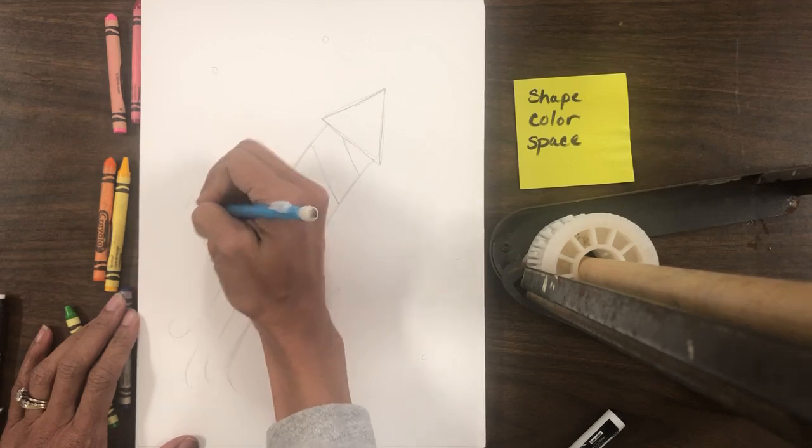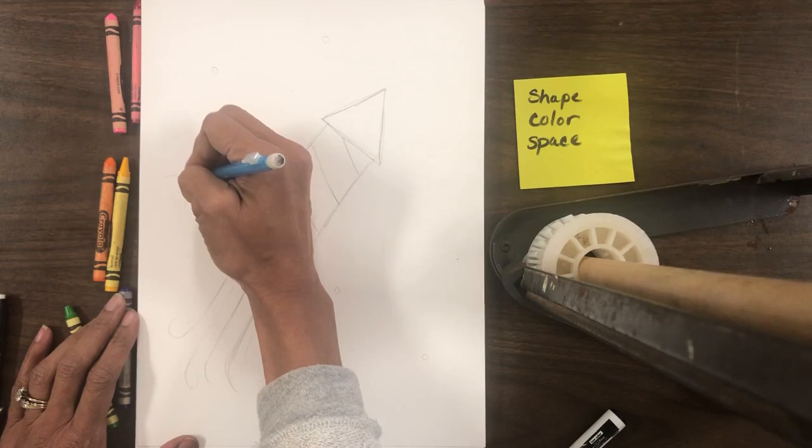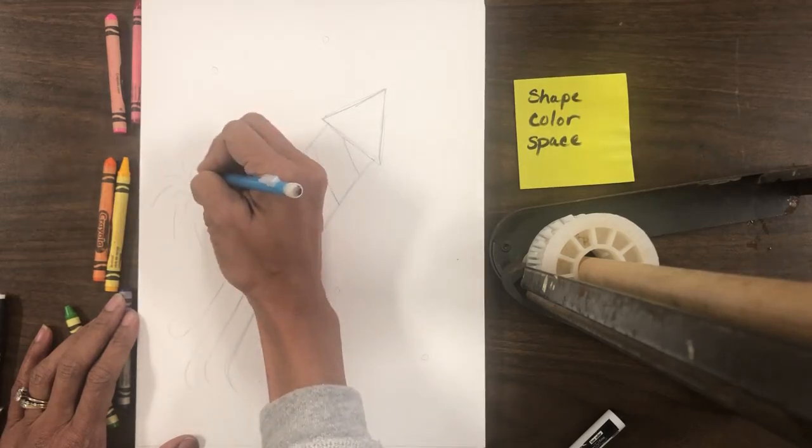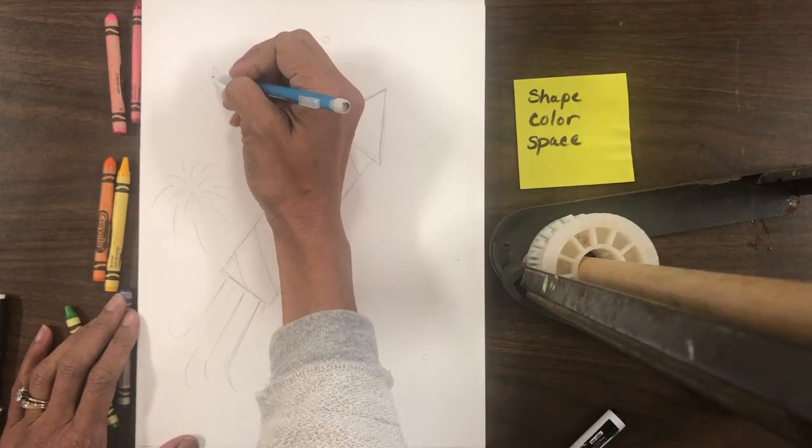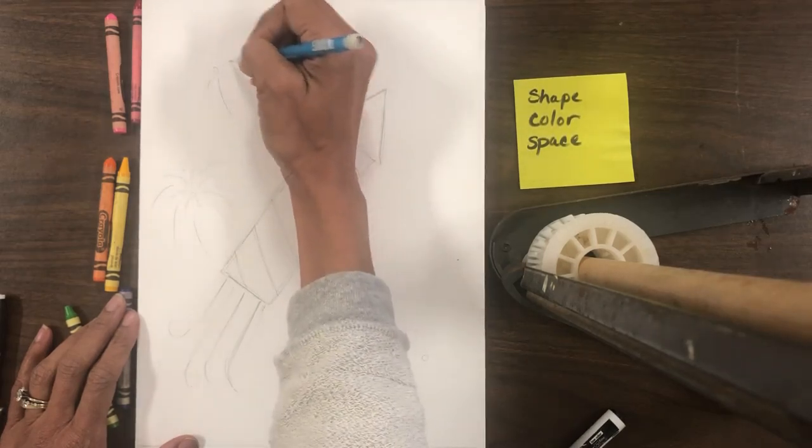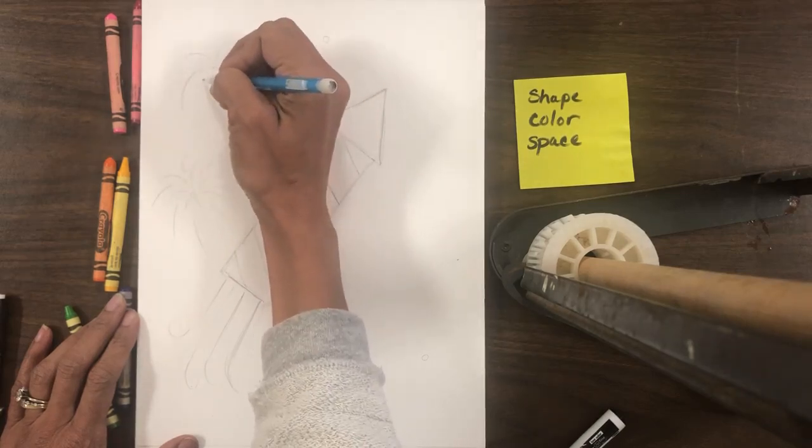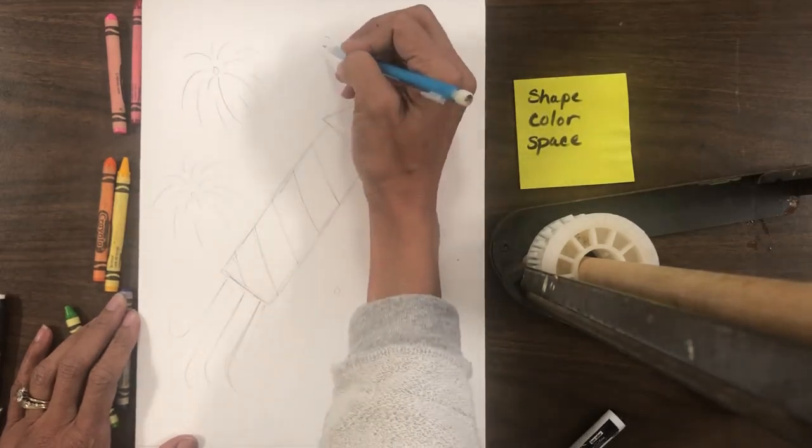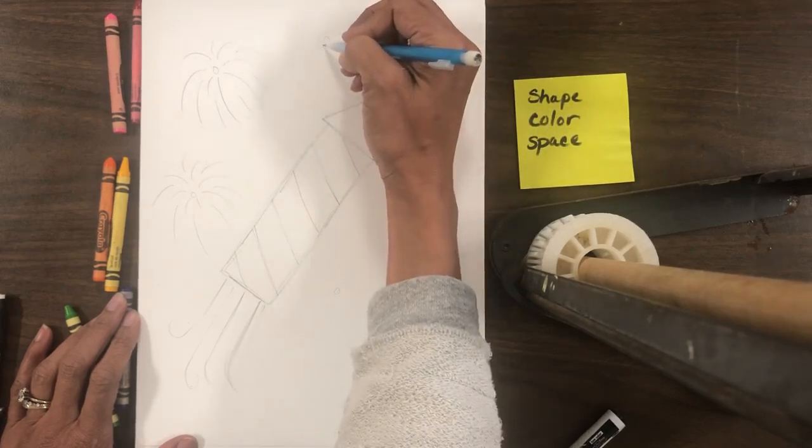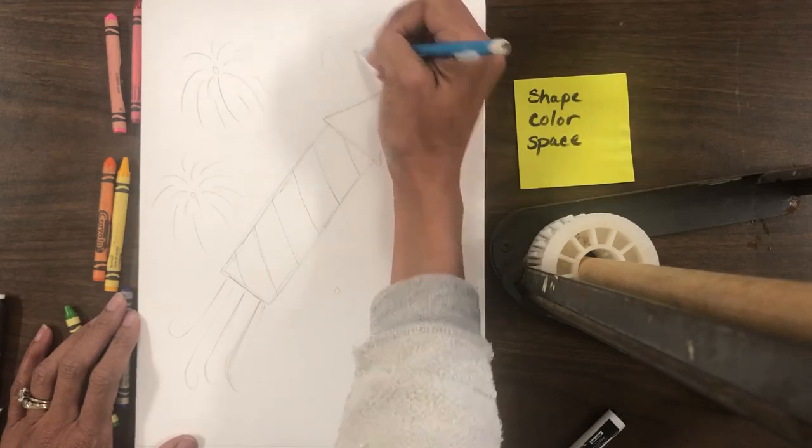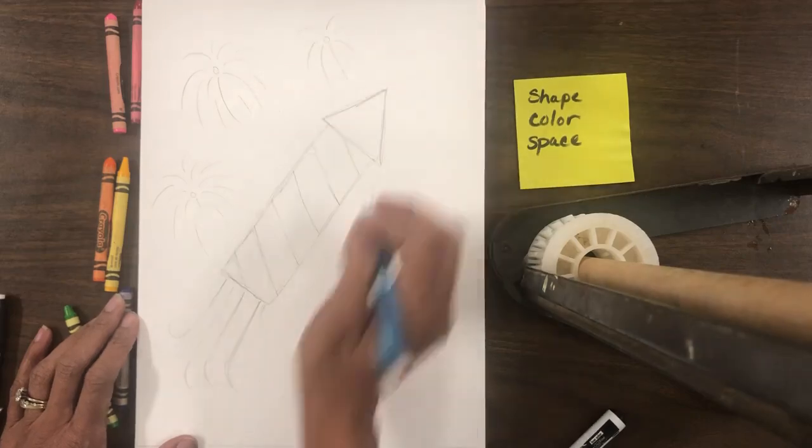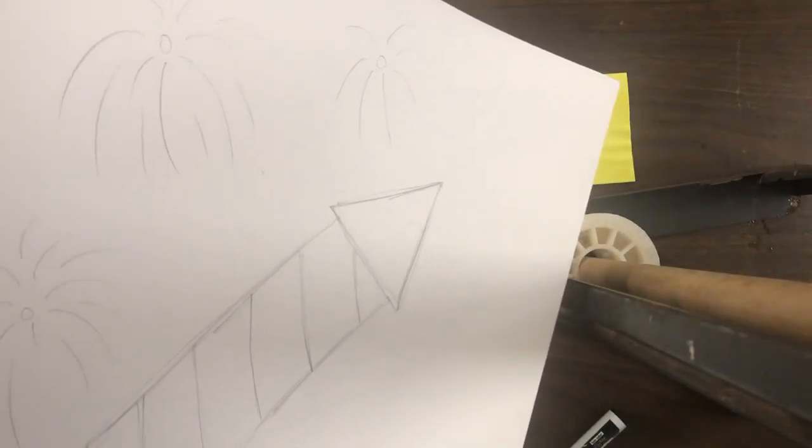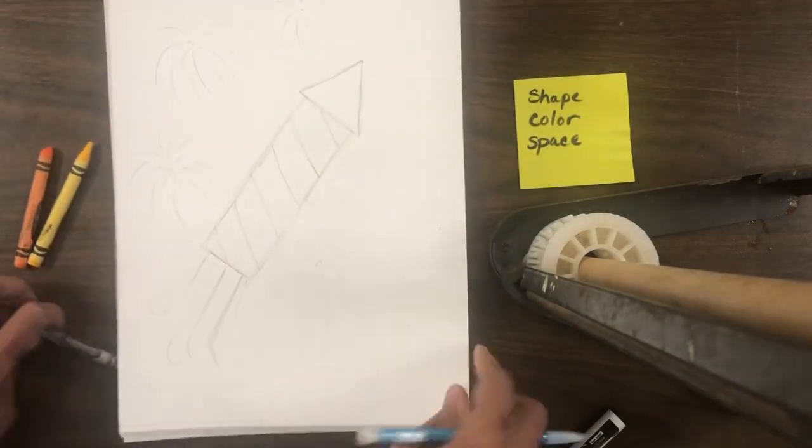And I'm going to do lines that look like this. Everybody see that? I'm going to do one over here. Just these lines, just coming out of there. And then I could do some straight ones here. Can everybody see that? Okay, and then I'm going to continue down here.